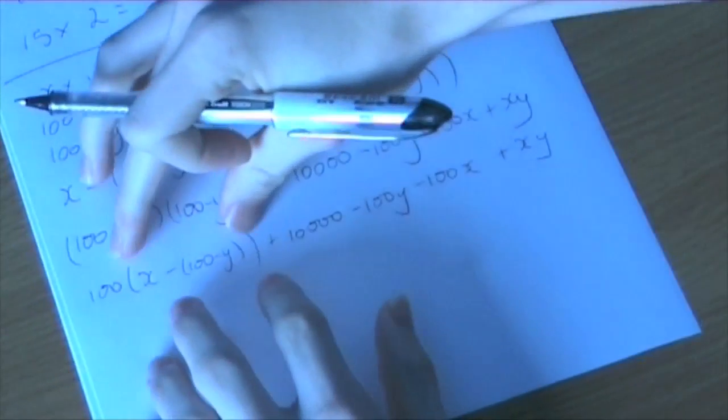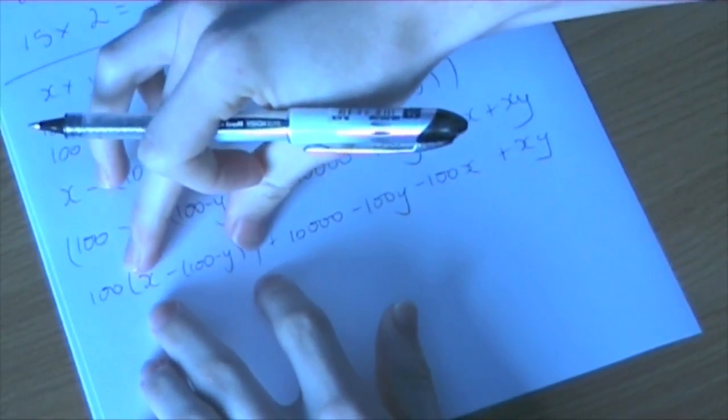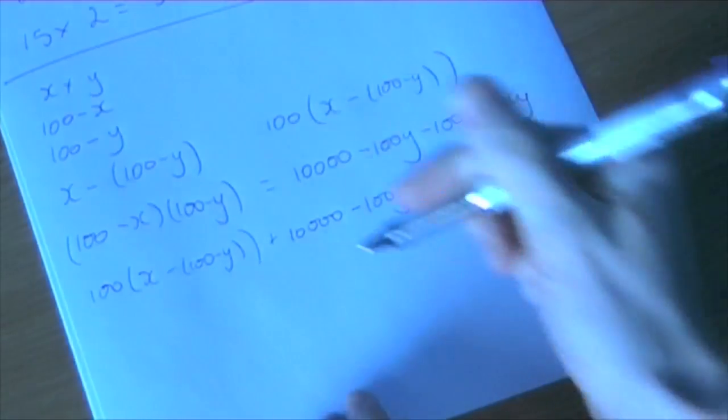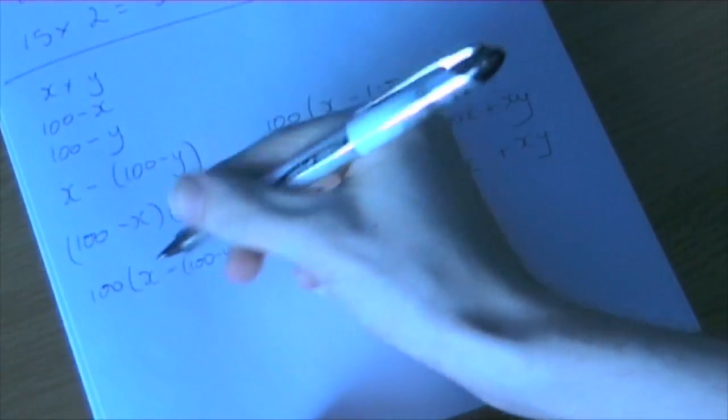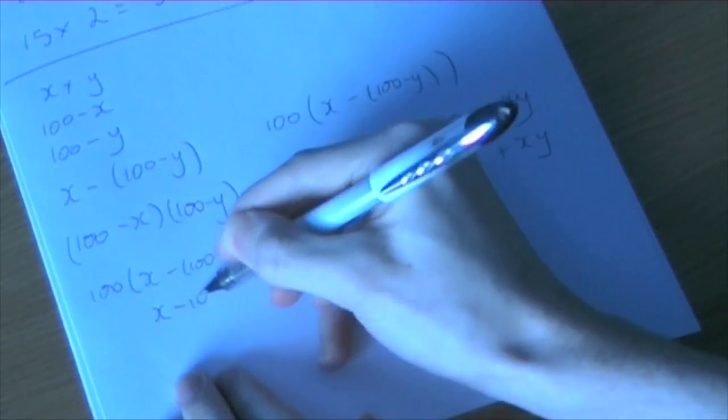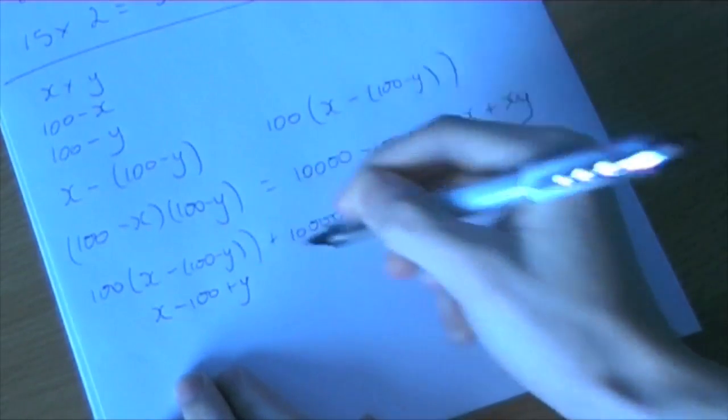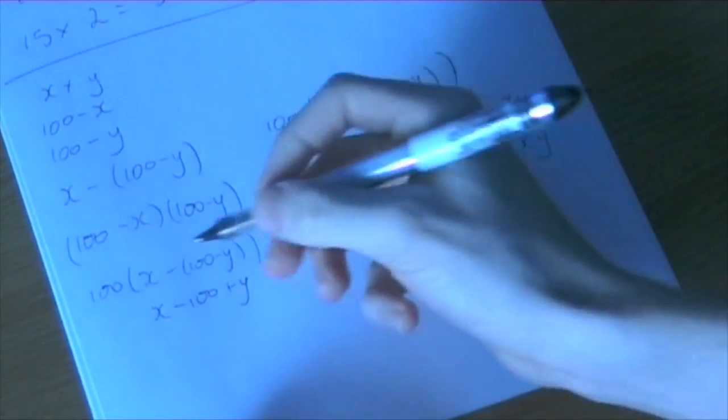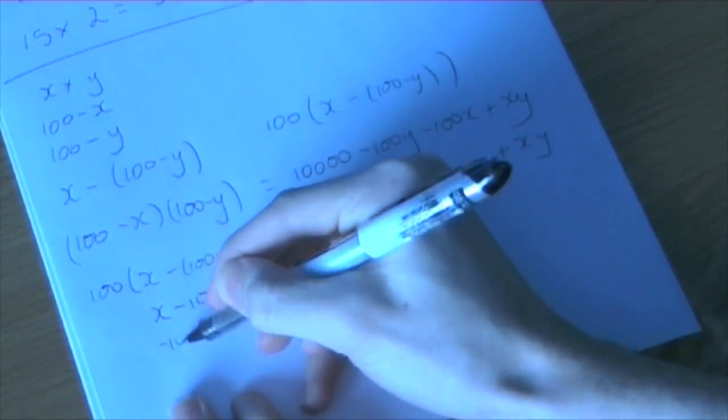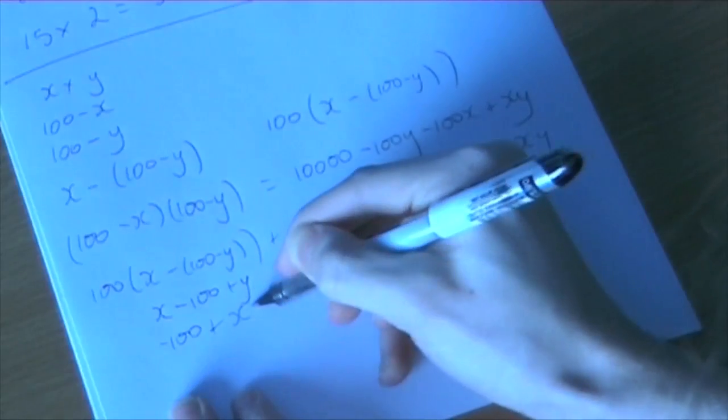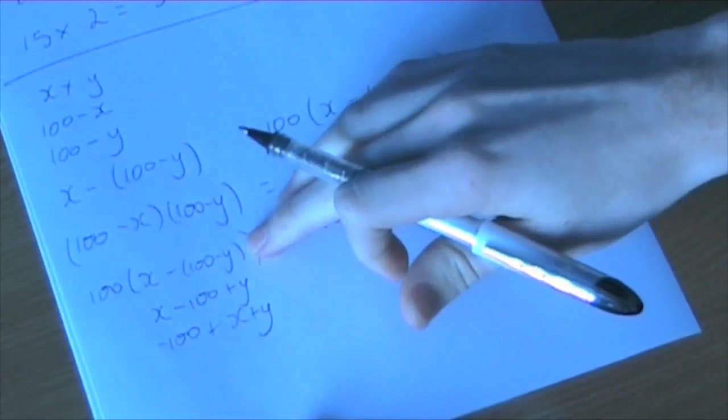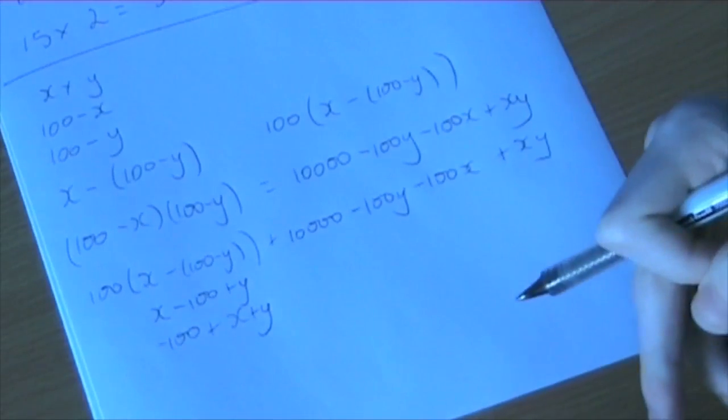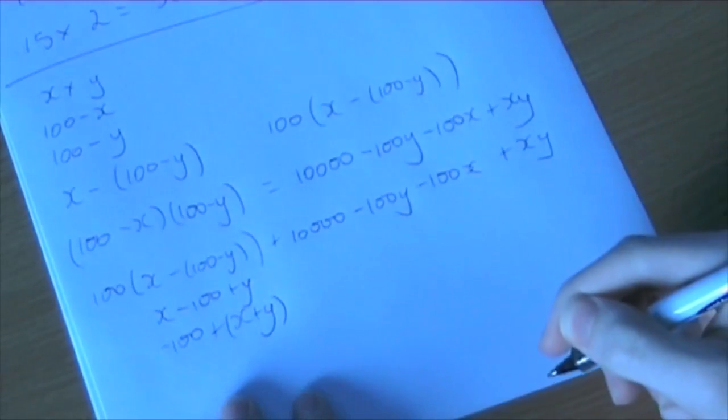So if we just focus on this particular bracket here for a moment, we can get rid of the brackets there, since it's all just subtraction, and basically replace it with x minus 100 plus y. And we can then just rearrange that to get minus 100 plus x plus y. Now, just realize I haven't actually done anything to this, I've just written it in a different order. Now I'm just going to put brackets around the x and y there. You'll see why in just a moment.